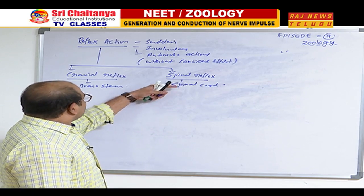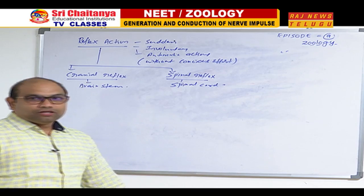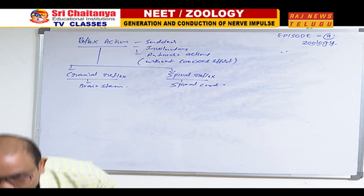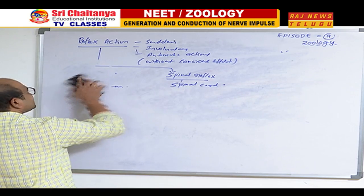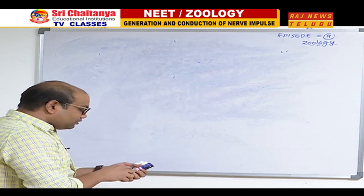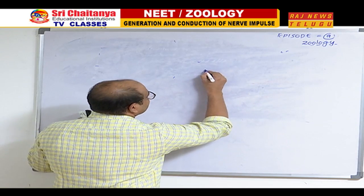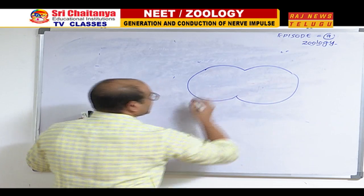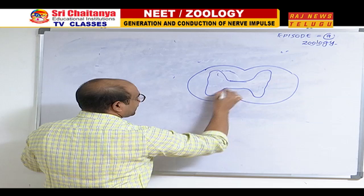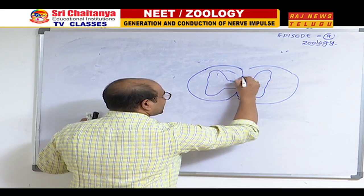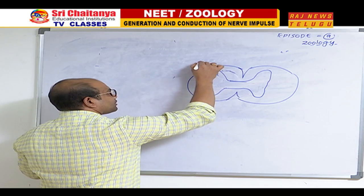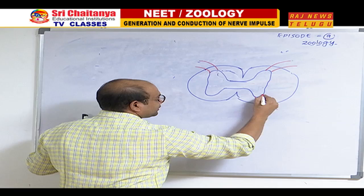After cranial and spinal reflexes, I want to explain what a reflex arc is exactly. Reflex arc is important for NEET. The reflex arc is a circuit made up of several parts. As you already know the structure of the spinal cord, this is the gray matter, this is white matter, and you know this is the dorsal horn and these are the ventral horns.